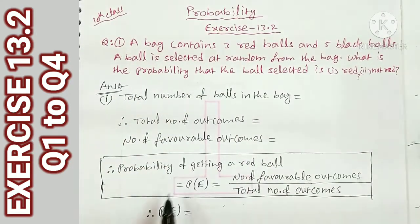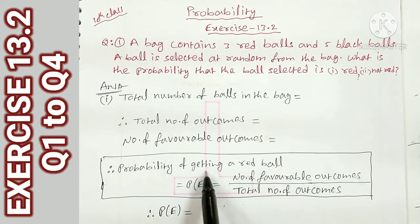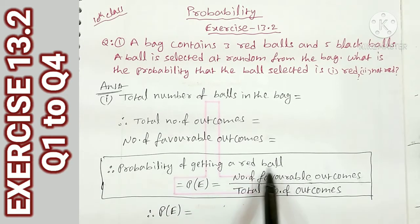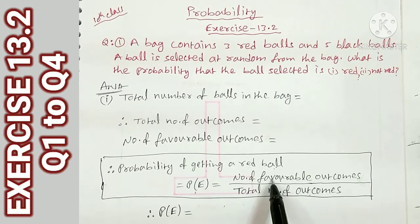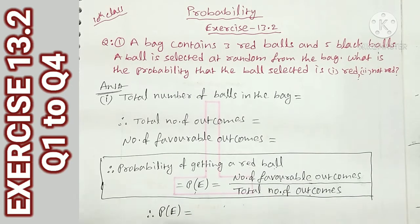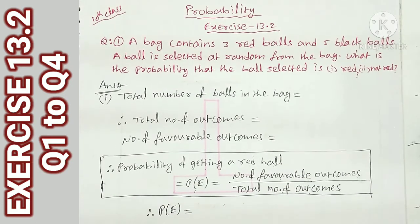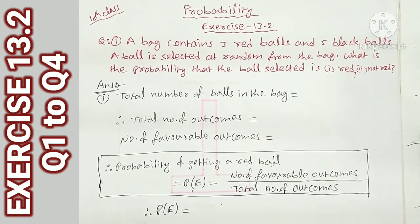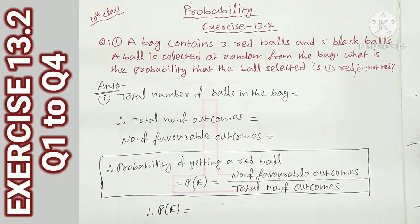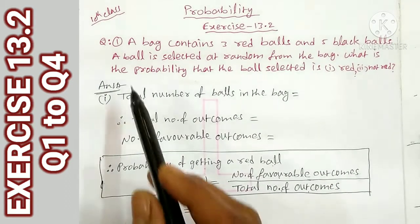The probability of getting an event is equal to the number of favorable outcomes divided by the total number of outcomes. That is the aim. So, let's look at the typical problem.